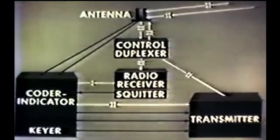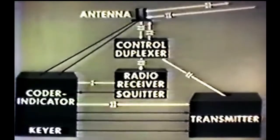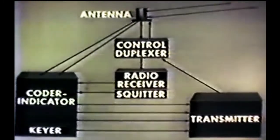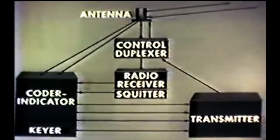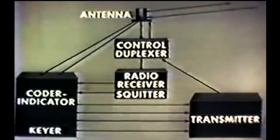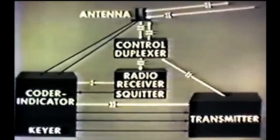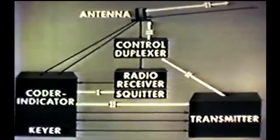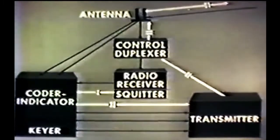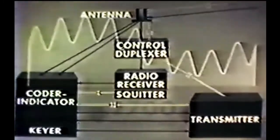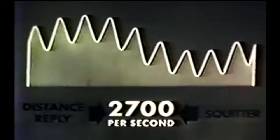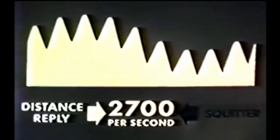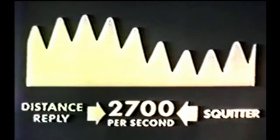If the beacon receives too few distance interrogations from aircraft to result in the beacon transmitting a total of 2,700 pulse pairs responses a second, a circuit in the receiver generates fill-in pulse pairs to make up the difference and so complete the wave form. These fill-in pulses are called squitter. 2,700 pulse pairs are maintained regardless of whether the pulse pairs are distance responses, squitter, or both combined.